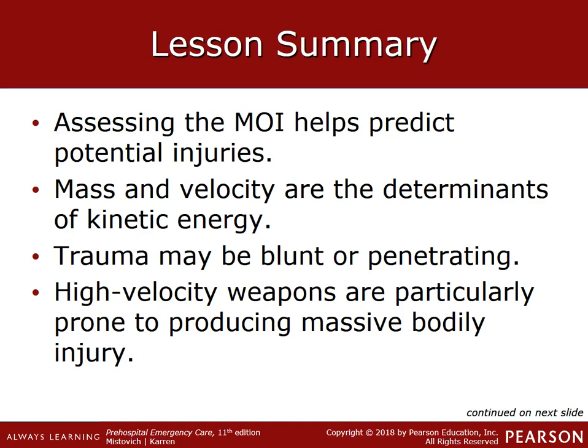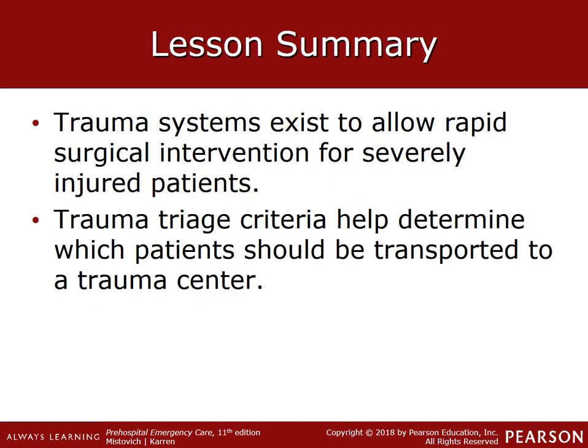Keep in mind that mass is not the worst factor — it is velocity and the amount of kinetic energy. The faster the velocity, the worse the injury will be. Trauma can be blunt or penetrating. High-velocity weapons are particularly prone to producing massive bodily injury. Trauma systems exist to allow rapid surgical intervention for severely injured patients, and trauma triage criteria helps determine which patients should be transported to a trauma facility to do the most good for the most patients in the least amount of time.